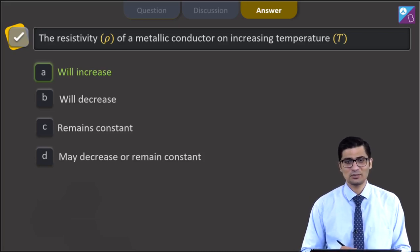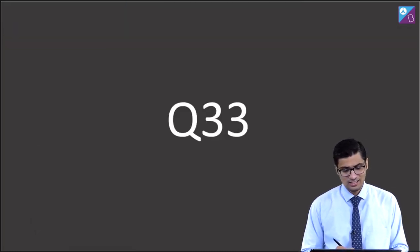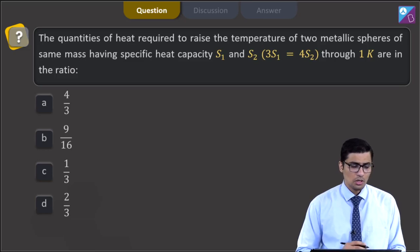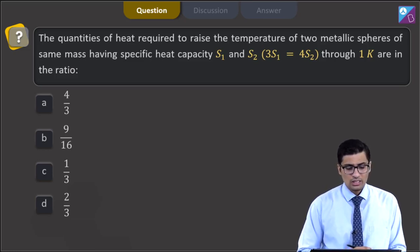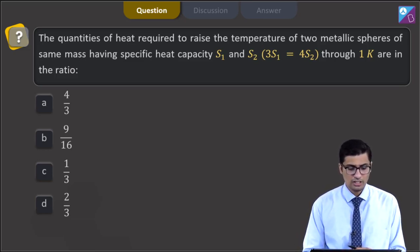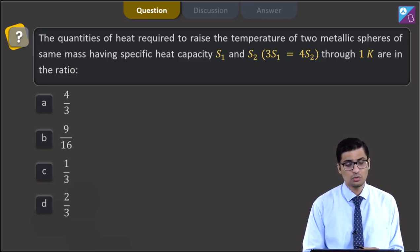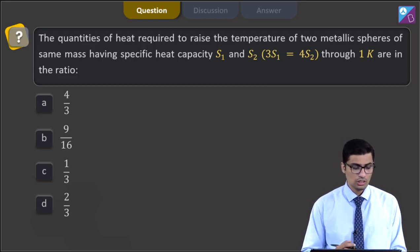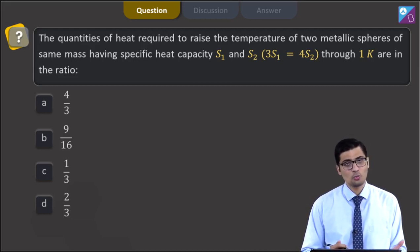Now, let us proceed to the next question. This is question 33. The question states: the quantities of heat required to raise the temperature of two metallic spheres of the same mass, having specific heat capacity S1 and S2 such that 3S1 is equal to 4S2, through 1 Kelvin, are in the ratio — 4 is to 3, 9 by 16, 1 by 3, or 2 by 3.